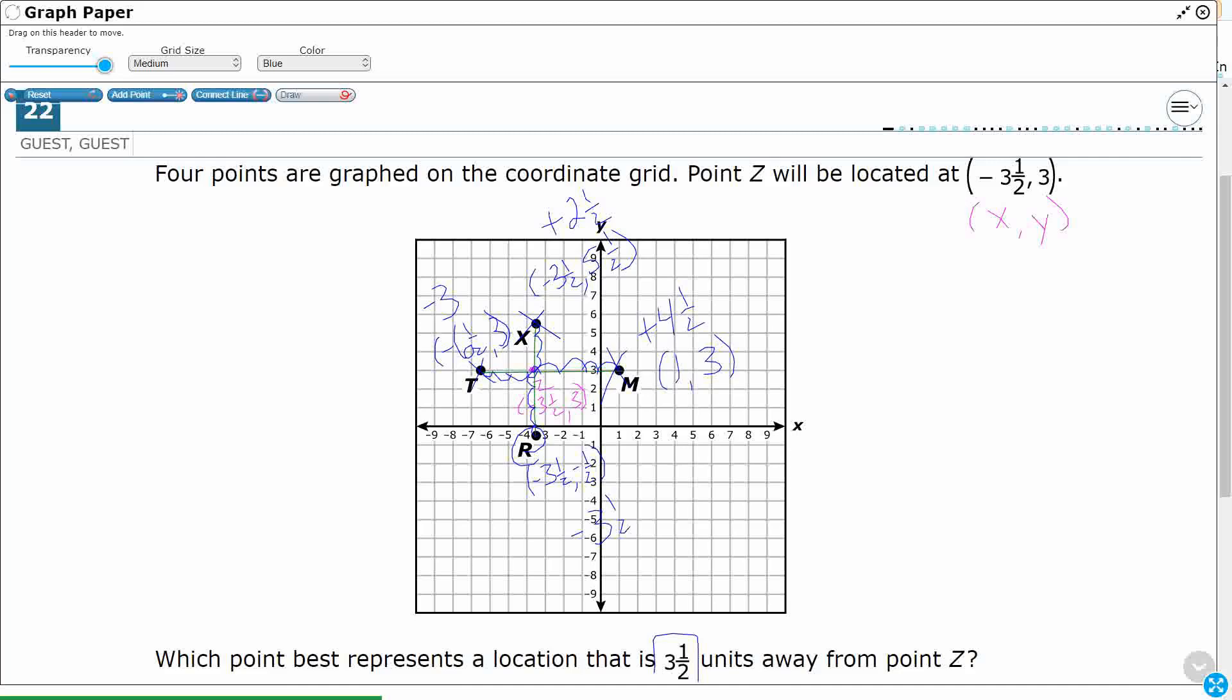So it's not X, it's not M, it's not T. 3.5 units away is going to be this R, because I went from Z, which is at 3.5, 3.